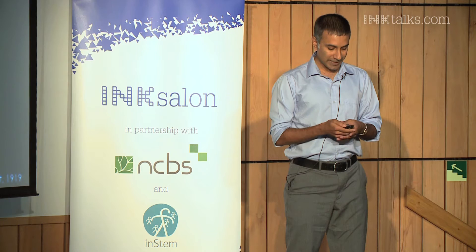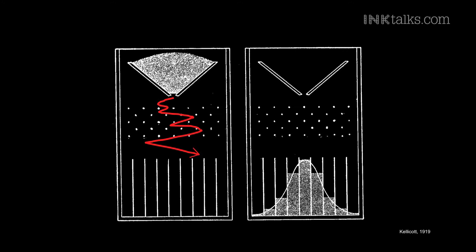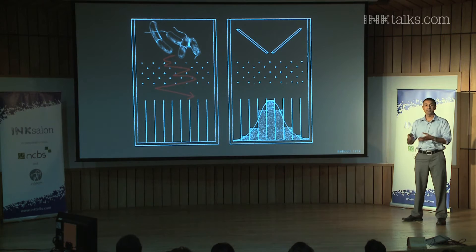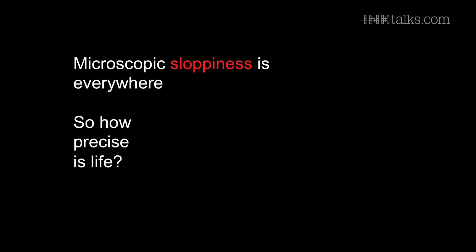Some balls end up in one bin, some in another, and some end up right in the middle. You can do the same experiment at the microscopic scale — instead of balls, think of cells. Left and right don't mean cells moving left and right; if a cell gains a molecule, it goes in one direction, and if it loses a molecule, it goes in another direction. What happens is exactly like the balls: every cell takes a different path. When you finish the experiment, some cells have a lot of proteins on the right side, some have very few on the left, and they form this bell-shaped curve. In biology, you can never expect the same event to end up the same way. If you repeat it, things happen differently — there's microscopic sloppiness everywhere.